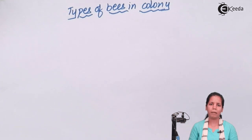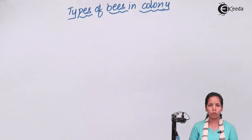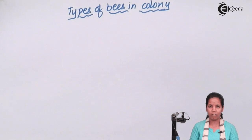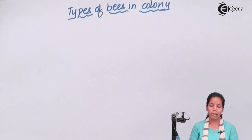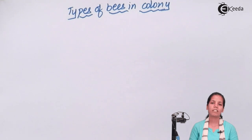Next come the male counterpart or the drones. Males or drones are 200 to 300 present in per hive or honeycomb. They never live in the honeycomb and they do less amount of work as compared to the last category, which is the worker bee.